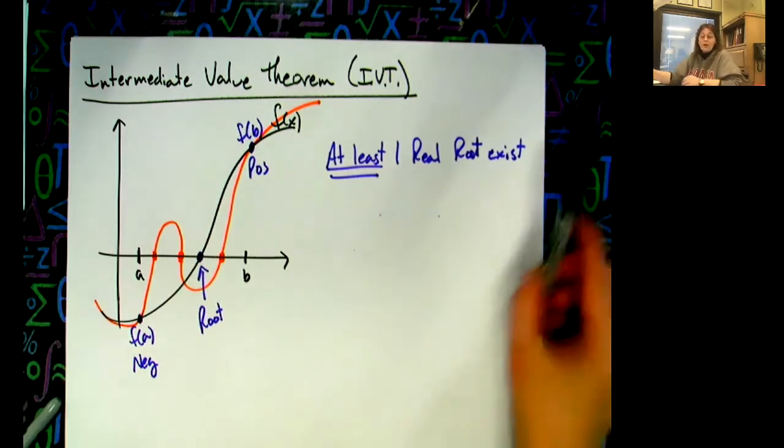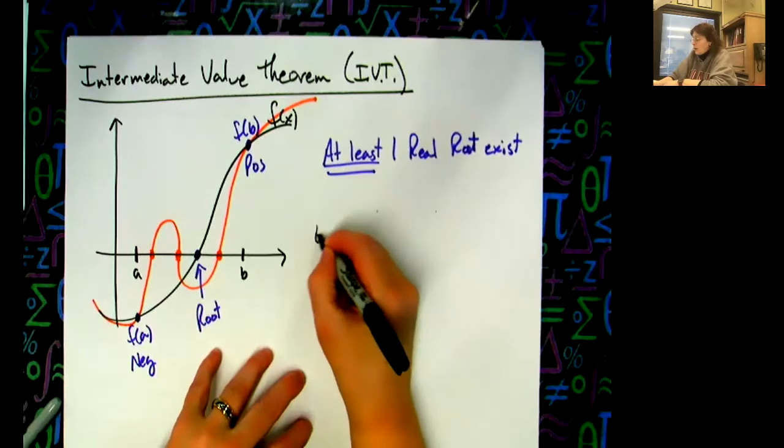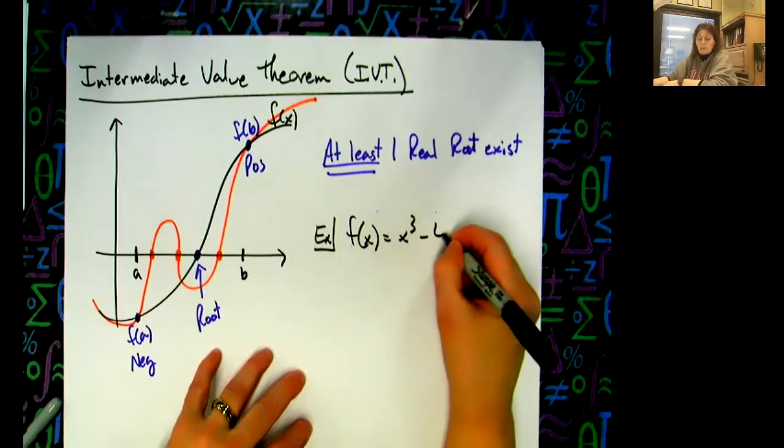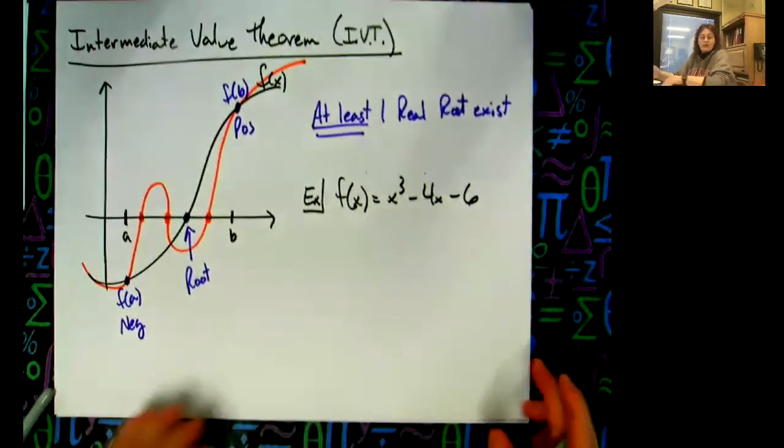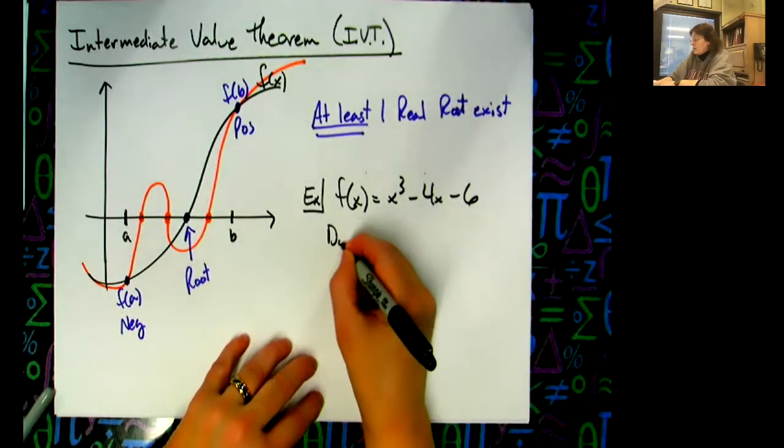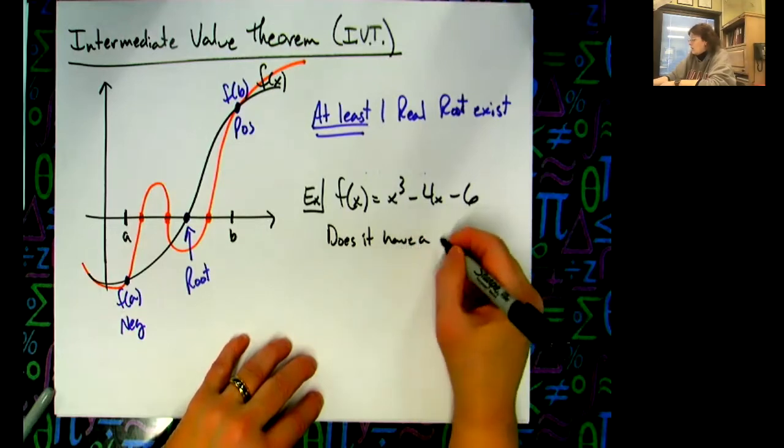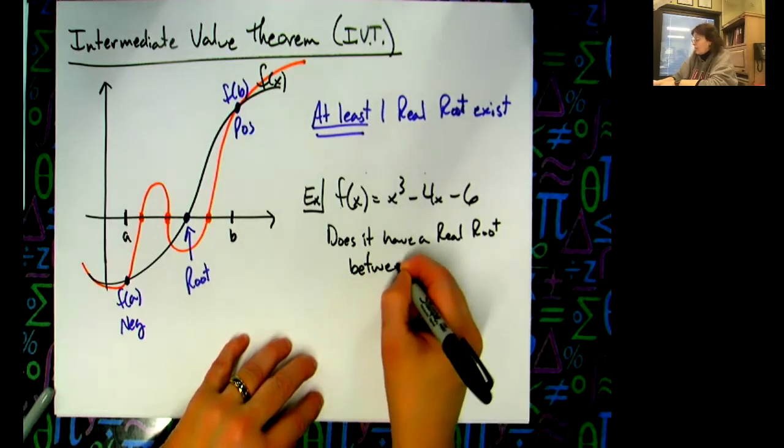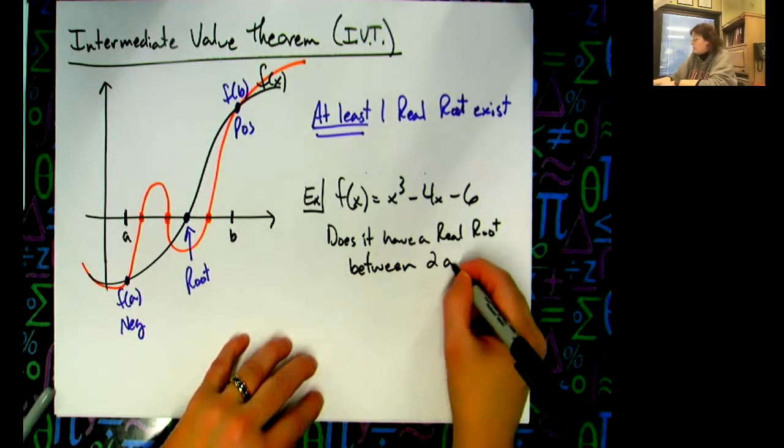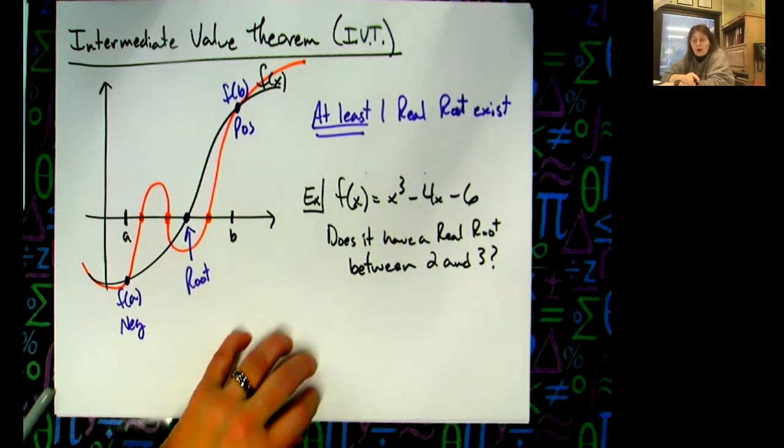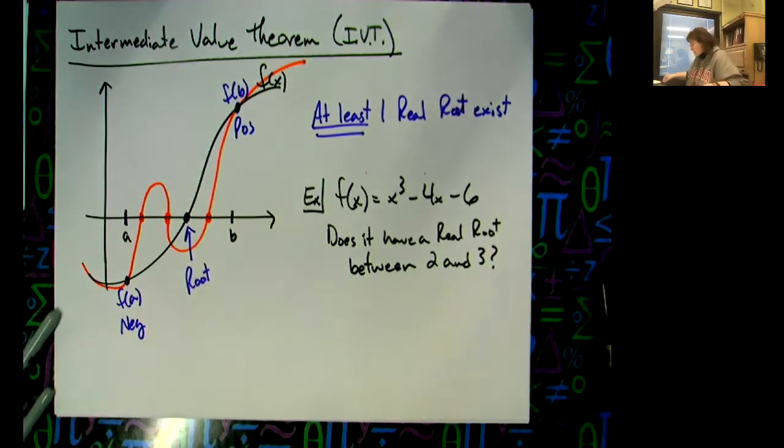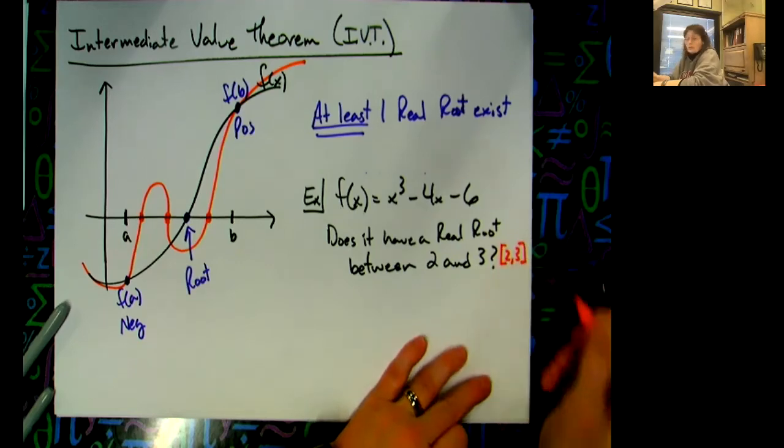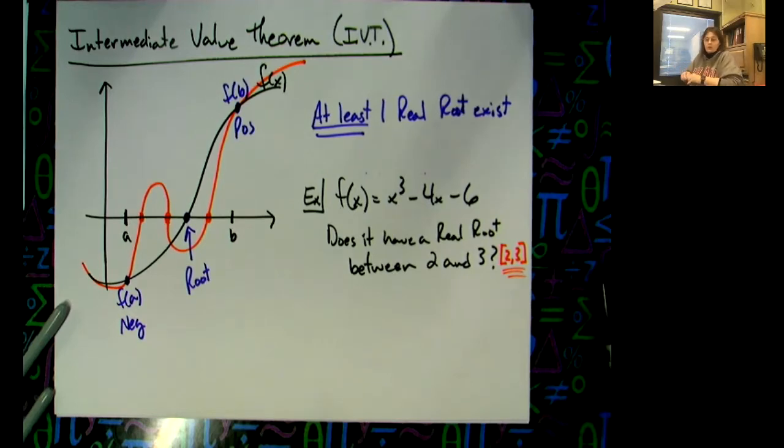So basically, I'm going to have a function - maybe say f(x) equals x to the third minus 4x minus 6. And then I want to know, does it have a real root between 2 and 3? They could give this to you in interval notation with square brackets. It's the same question, doesn't matter.